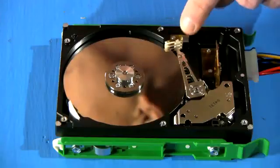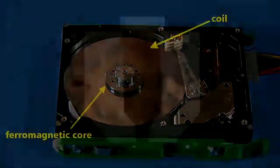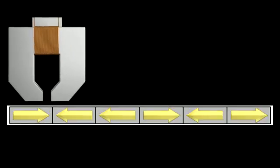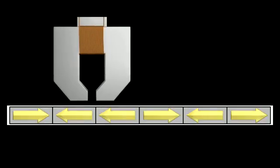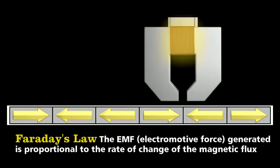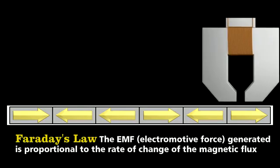At the end of the arm lies the most critical component—the head. At its simplest, it's a piece of ferromagnetic material wrapped with wire. As it passes over the magnetized sections of the platter, it measures changes in the direction of the magnetic poles—recall Faraday's law—a change in magnetization produces a voltage in a nearby coil.